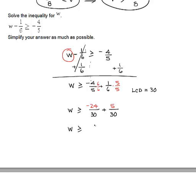I still have my w over here. I have negative 24 plus 5, all over the same denominator, which is 30. So w is greater than or equal to negative 24 plus 5. Again, I'm adding two numbers with different signs, so I do a subtraction.